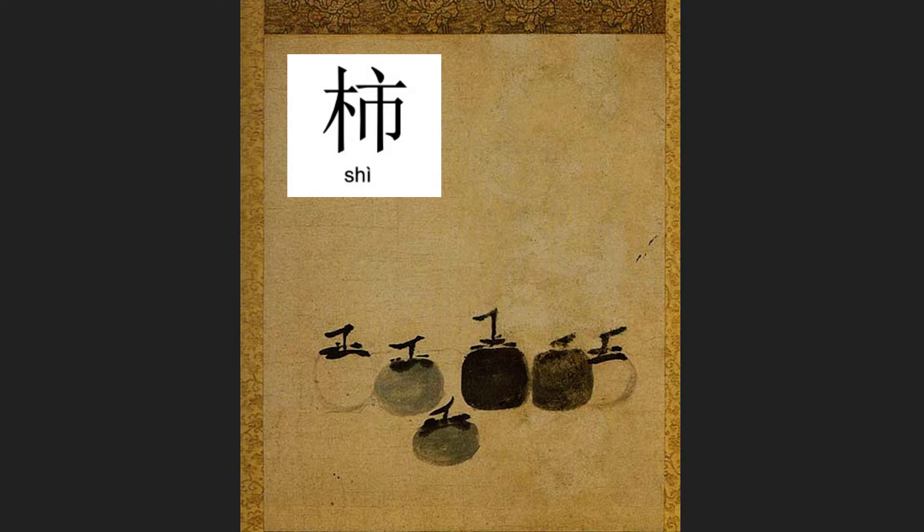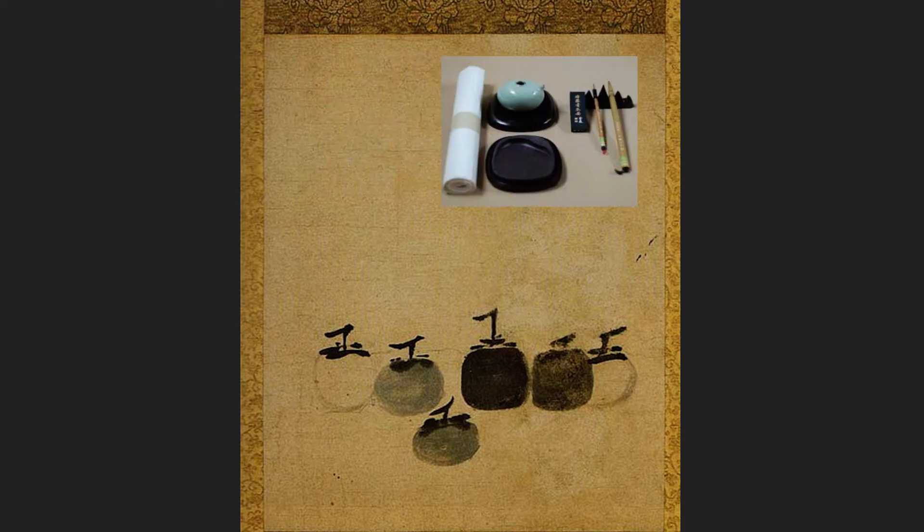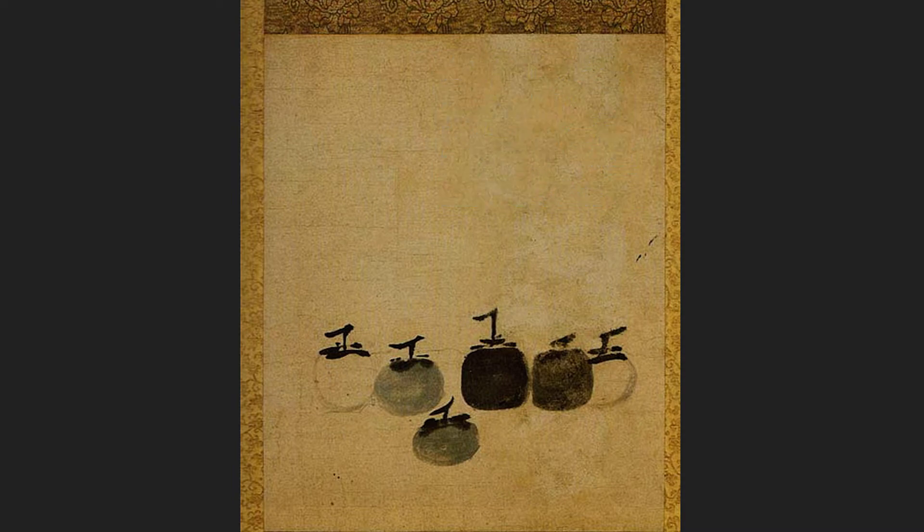Both use the same primary tools, the brush and the ink, and they're often integrated together with lines of poetry accompanying the painted image. Historically, these three arts — painting, poetry, and calligraphy — were known as the three perfections.